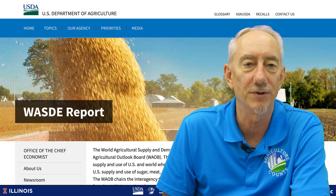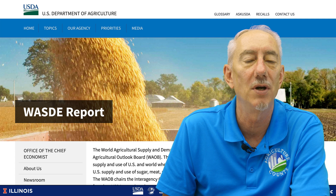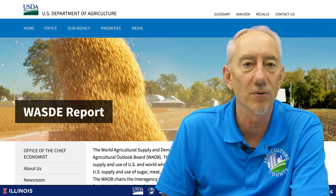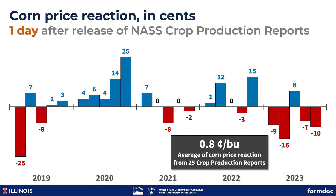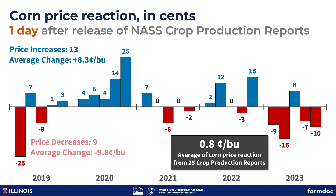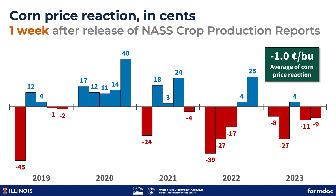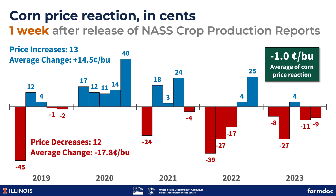NASS measures the price changes and produces reports with that information. It's important to note that the price reactions are neutral over time. Here is one example for corn futures price reactions from 25 recent USDA reports. There were 13 price increases, 9 decreases, and 3 reports with no change on the day of the report. In the week following the report, there were 13 increases and 12 decreases for corn futures.